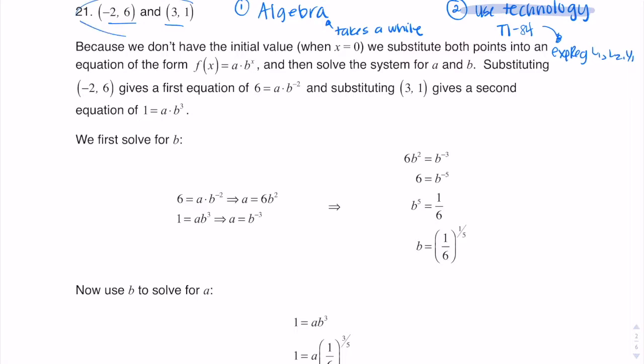So if you're ever asked to find an exponential model and you're given two ordered pairs — especially when neither of the ordered pairs is a Y-intercept, meaning you don't have zero and then some number — it makes the algebra just that much harder. That's why I prefer to use technology. I'm going to put a little pause in this video, flip over to my calculator, and then I'll come back and do the algebra. I want to show you the easier method first, just in case you don't watch the whole video.